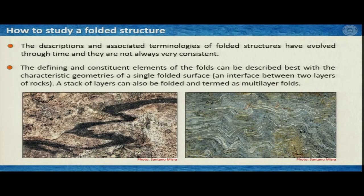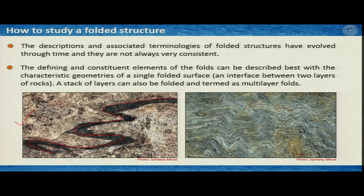To define a folded structure, you can think of it in two different ways. The first is to consider a single layer or an interface between two layers — a single folded surface. If you have two layers, you can consider their interface and how it defines the fold. This is shown in the photograph, where a black layer in a granitic matrix defines the fold. The second way is when you find a stack of layers that can also be folded — we term these multi-layer folds.